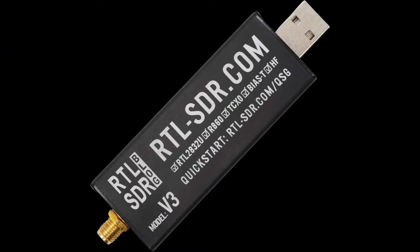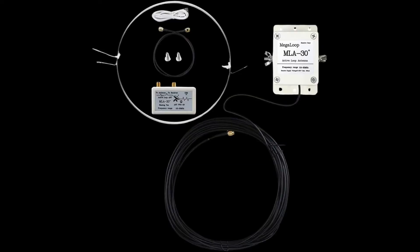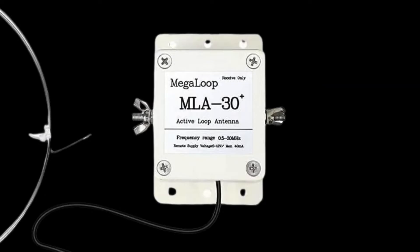I will start with the RTL-SDR Blog version 3. This SDR receiver offers a frequency range from 500 kilohertz to 1.7 gigahertz, with excellent sensitivity and selectivity. Equipped with a built-in HF bias-T, this SDR supports the use of an external antenna with direct sampling mode. The SMA antenna connector allows you to easily connect various antennas for different applications. If you want to use this for receiving amateur radio, I suggest getting an outdoor loop antenna. My favorite antenna is the MLA-30 Plus loop antenna, which has a built-in preamp to bring in weaker signals.